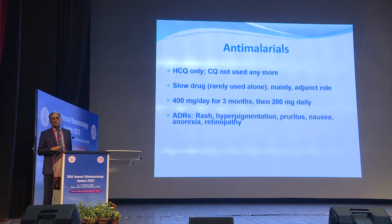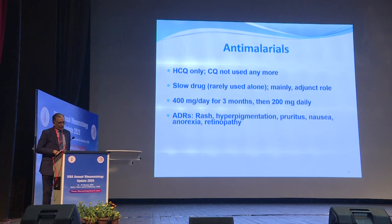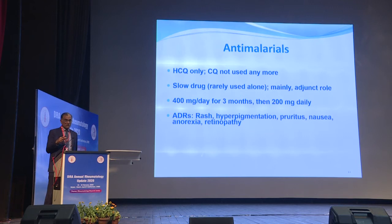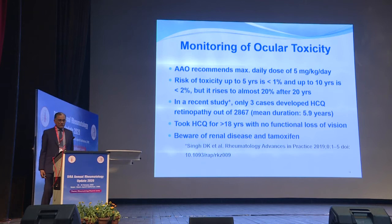The dose is 400 mg per day for three months and then reduced to 200 mg. Patients taking 400 mg forever is quite concerning, as it can cause toxicity. Adverse drug reactions include rash, hyperpigmentation, pruritus, nausea, anorexia, and retinopathy. If a patient on combination therapy develops complete loss of appetite, suspect hydroxychloroquine first — it can cause complete anorexia, not methotrexate.